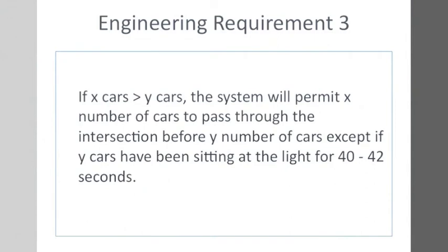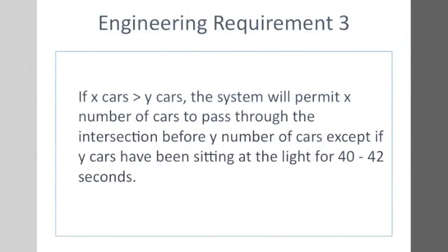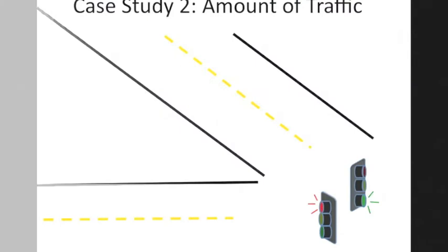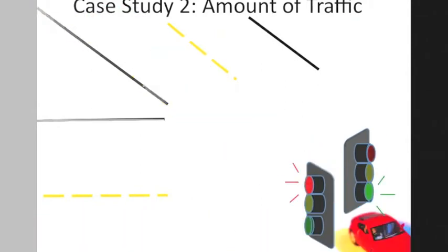The light will also transition to allow the greatest number of cars possible through the intersection. Here is an example. Note that the two cars are approaching the light from the left side of the screen and one car is approaching from the top. Watch the light this time and note how it transitions to let the two cars from the left pass through the intersection before the single car.